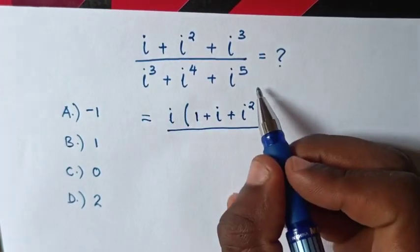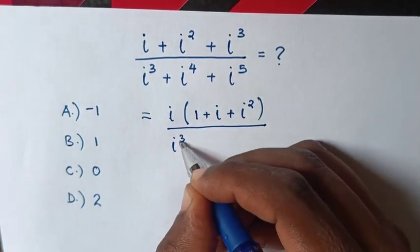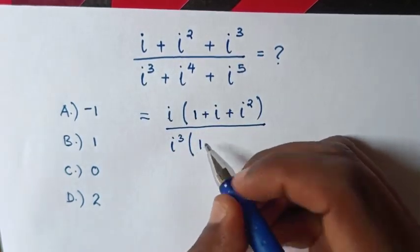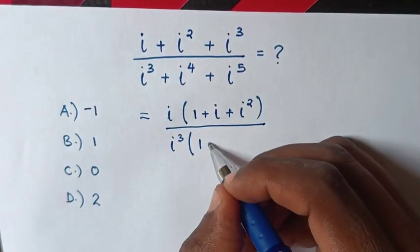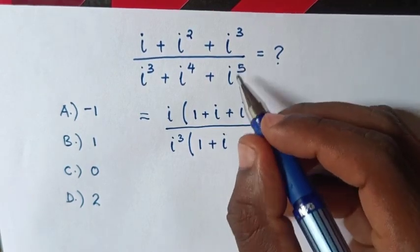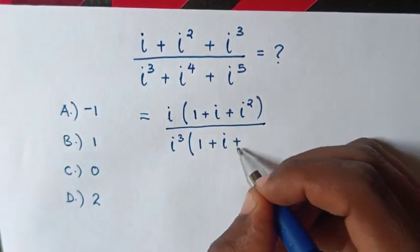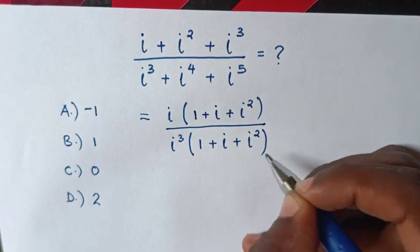In the denominator, i³ is common. This divided by this is 1, this divided by this is i, so plus i, this divided by this is i², so plus i² in the bracket.